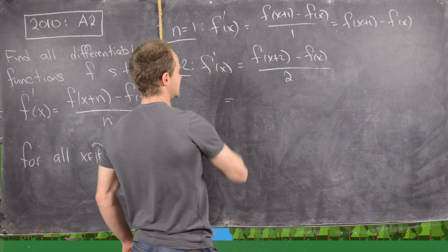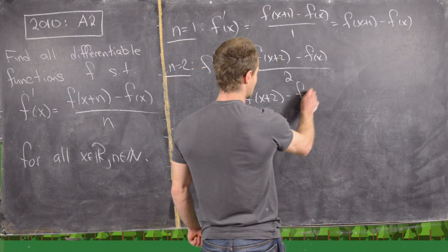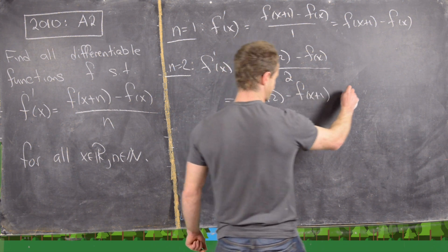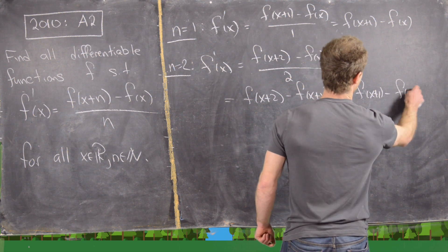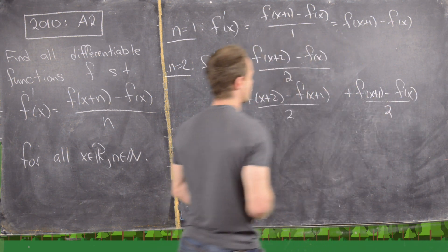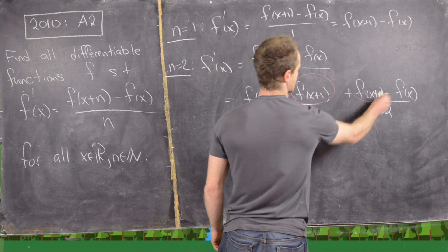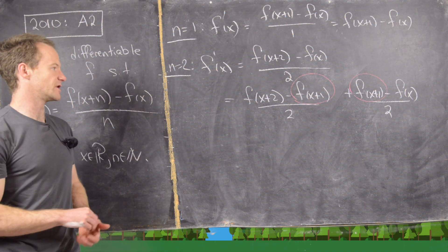So in other words, this is the same thing as f(x+2) minus f(x+1) plus f(x+1) minus f(x). And now I'm going to put each of those over 2. So notice I subtracted f(x+1) here and I added f(x+1) there.